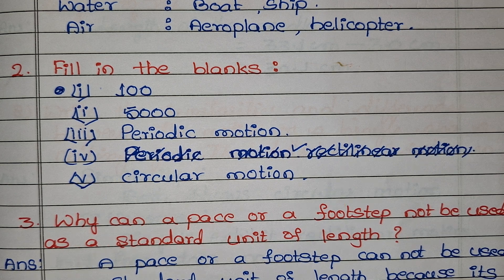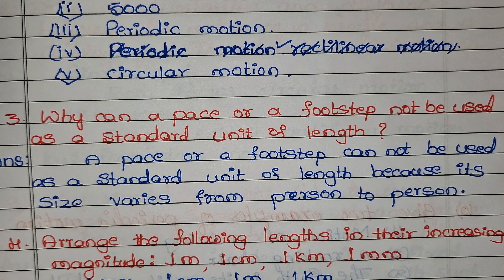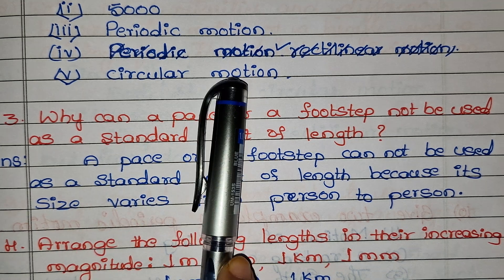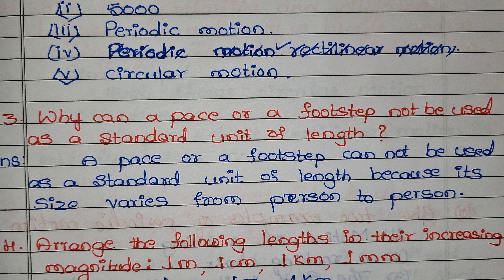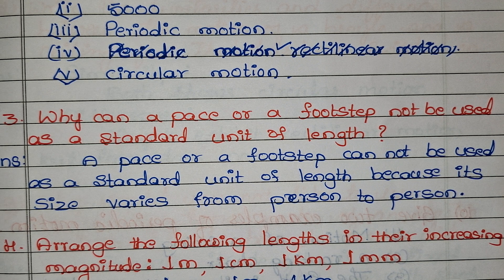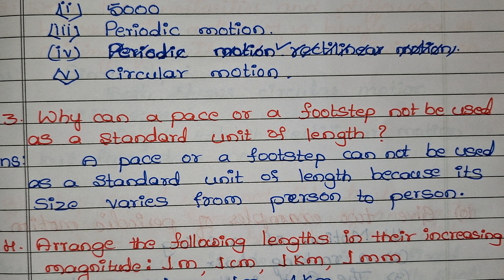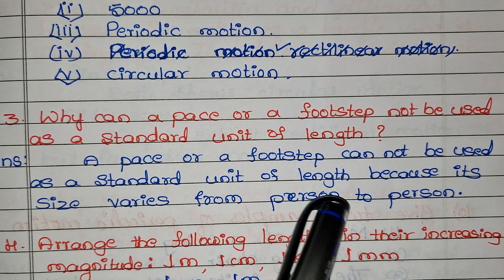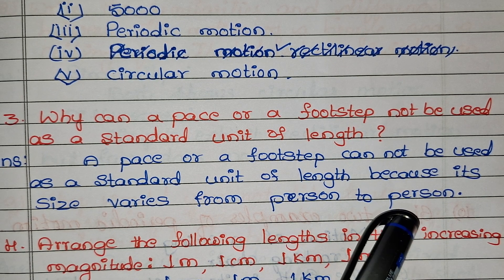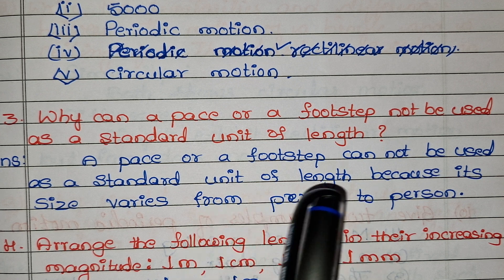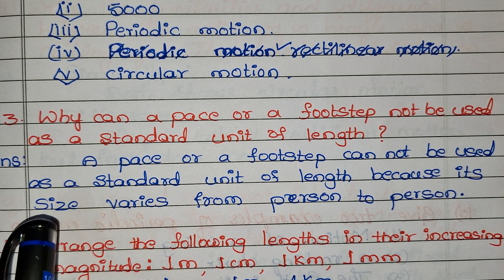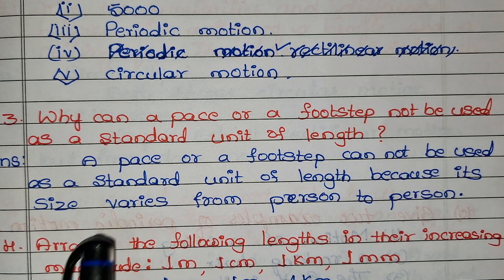Question 3: Why can a pace or a footstep not be used as a standard unit of length? A pace or footstep cannot be used as a standard unit of length because its size varies from person to person. Since a standard unit must give an exact, consistent measurement, the footstep cannot be used.